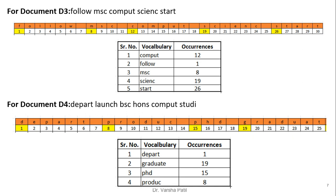For document D3 — follow, MSc, compute, science, start — we follow the same steps. We make the proper count and keep the vocabulary and their occurrences respectively. The same procedure is followed for document D4, finding out the particular character location and maintaining the index.